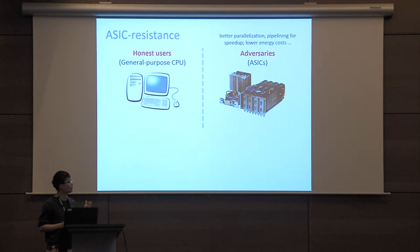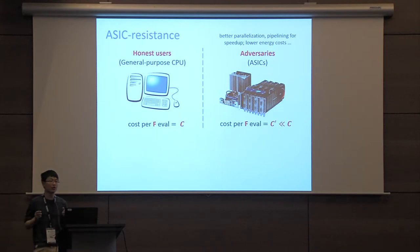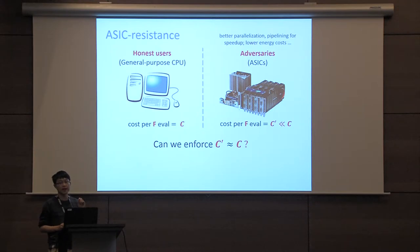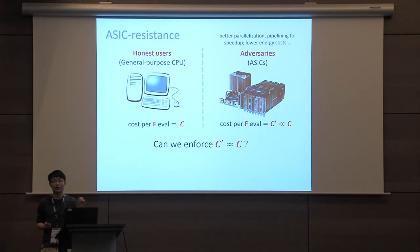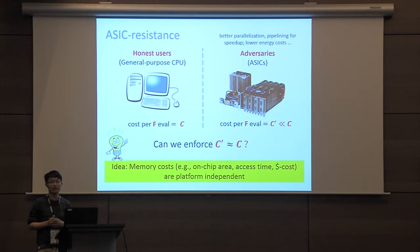It is a better choice when adversaries can use custom-made hardware like ASICs. Such hardware may exploit parallelism and pipelining to achieve massive speedups and have lower energy costs. Consequently, the adversary's average cost per hash evaluation can be much lower than that of honest users. Ideally we'd like to ensure these costs are as close as possible.